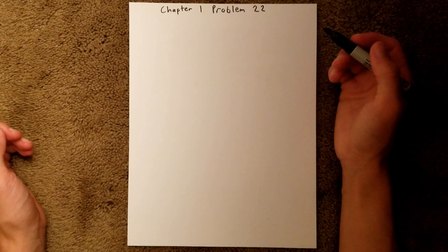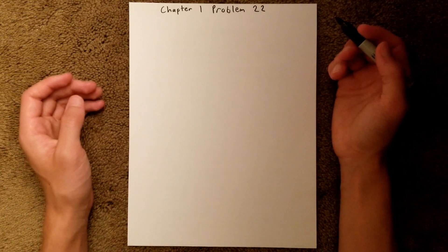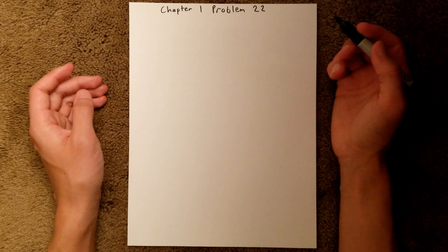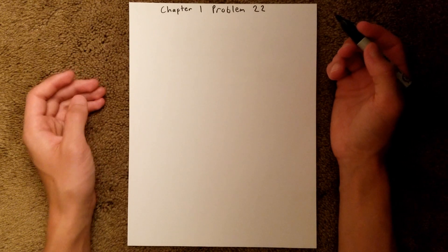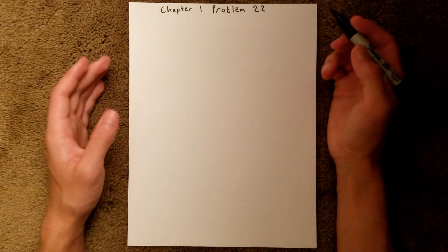Chapter 1 is all about chemical measurements, and in Problem 22, we are given the mass and weight percent of an aqueous perchloric acid solution, and we are asked to find how many grams of that are perchloric acid, and how many grams are water.